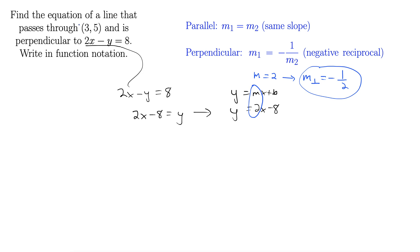Now we have a point, (3, 5), and we have a slope, negative 1 half. So we can use point-slope form to get the equation of our line.